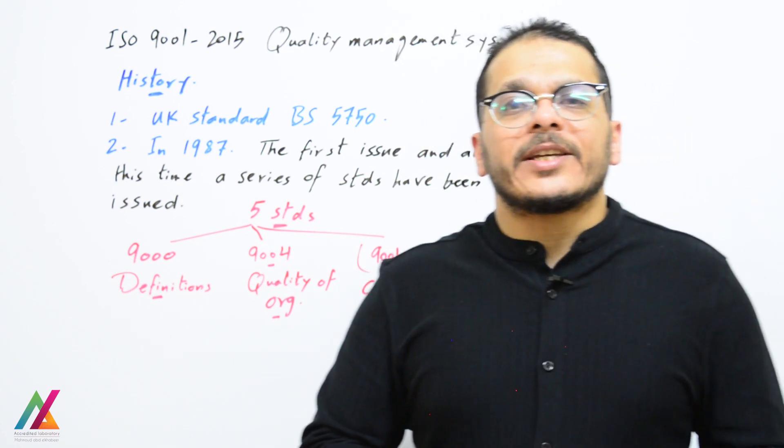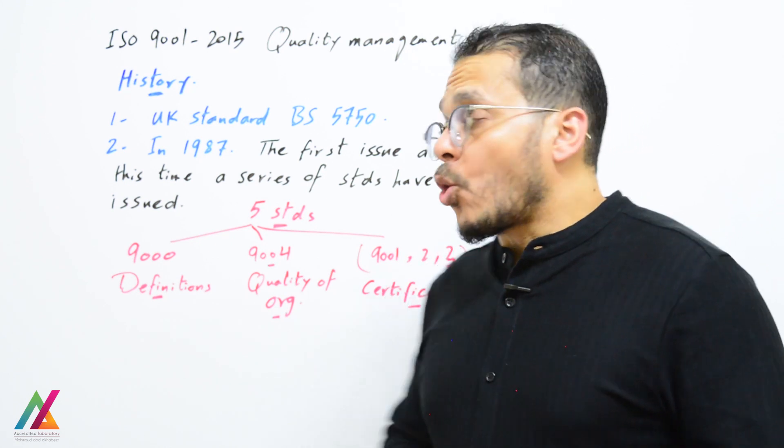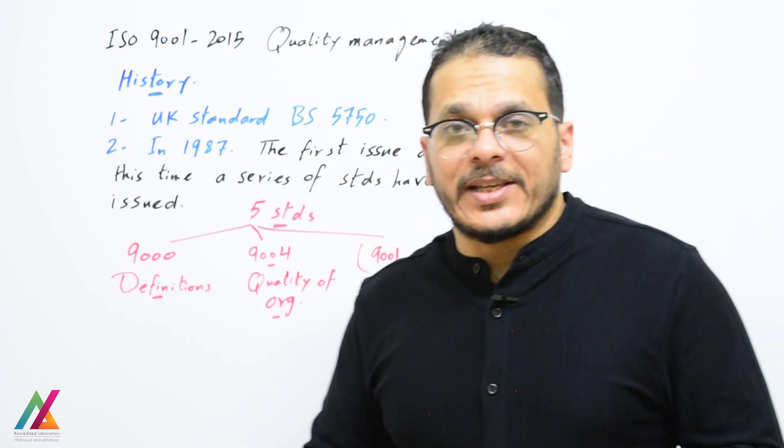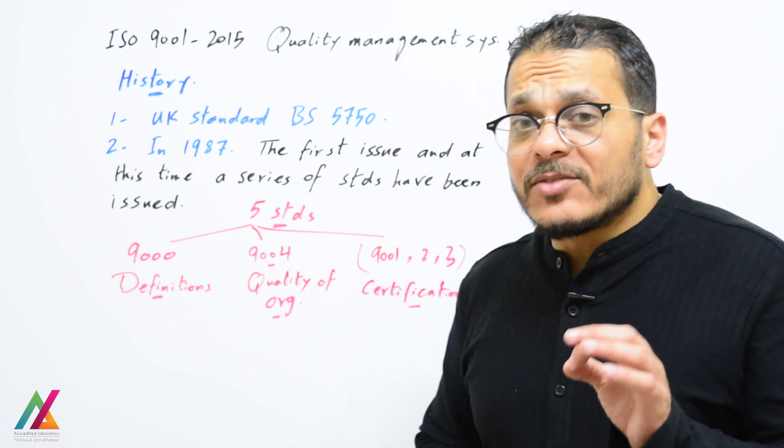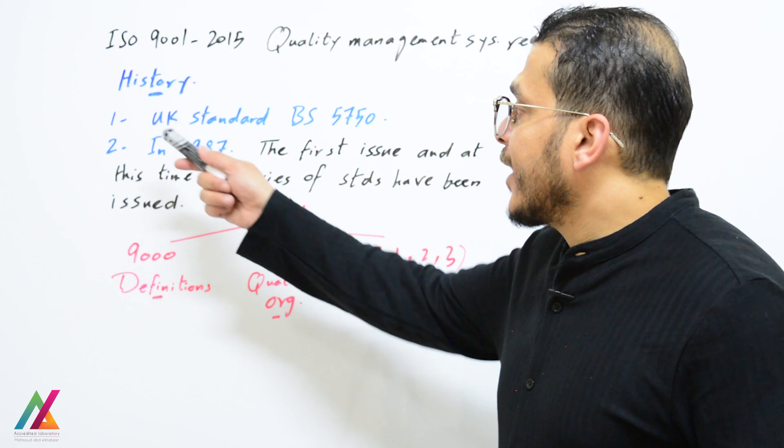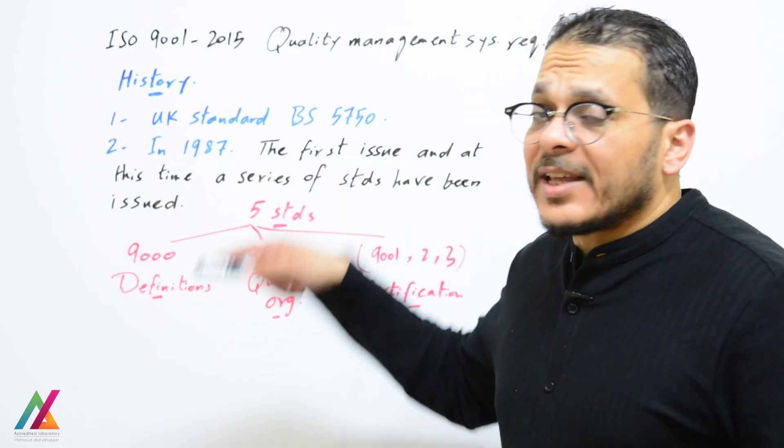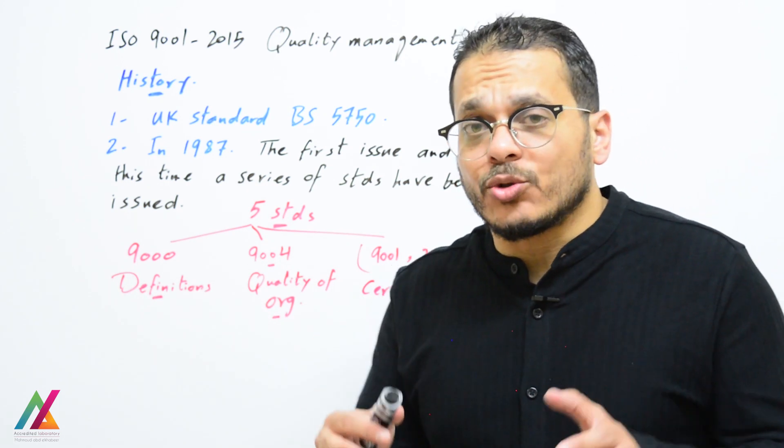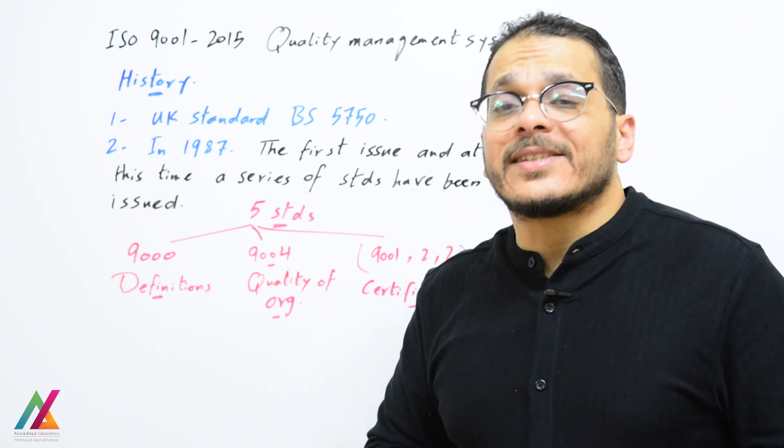This is the first lecture on ISO 9001-2015 Quality Management System requirements. I will start with the history of this standard. The basis for creating this standard was the UK standard BS 5750, and after that, the first standard was issued in 1987, ISO 9001-1987.